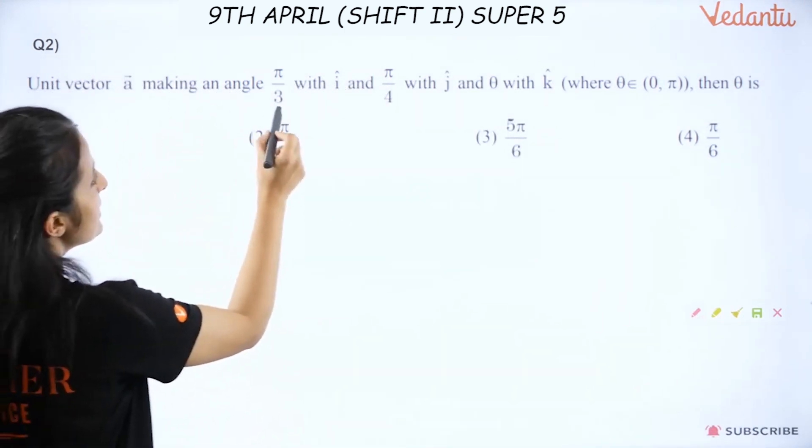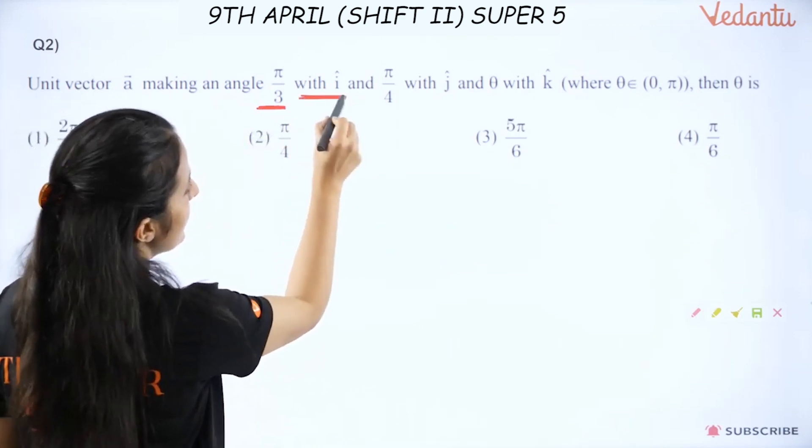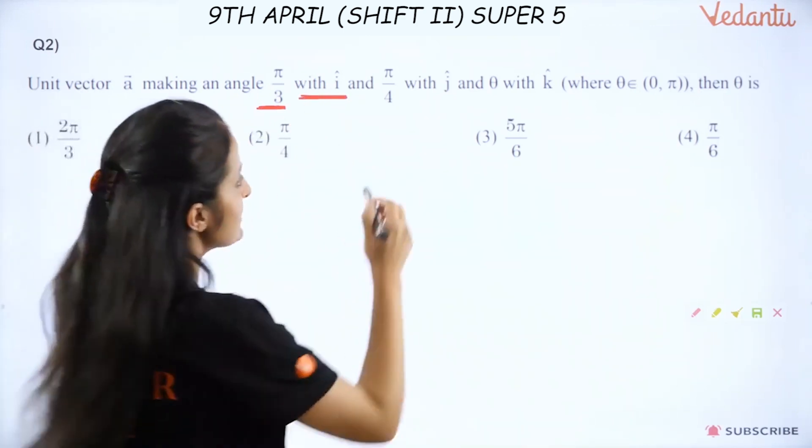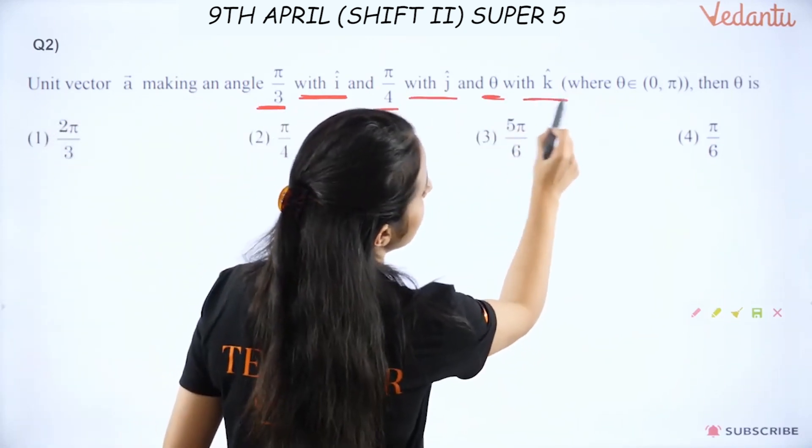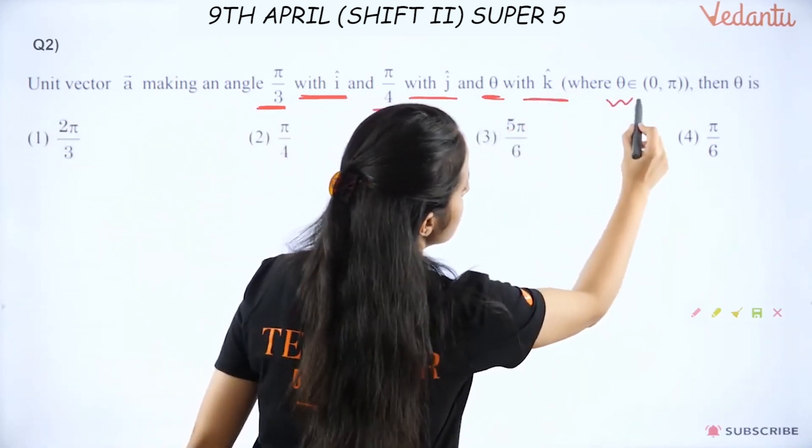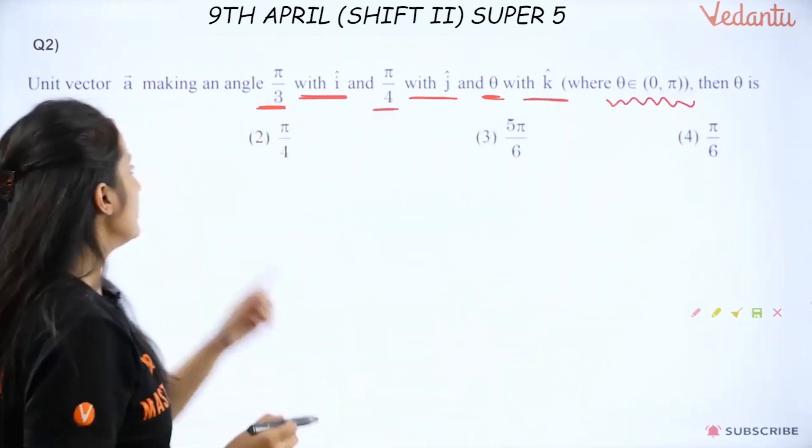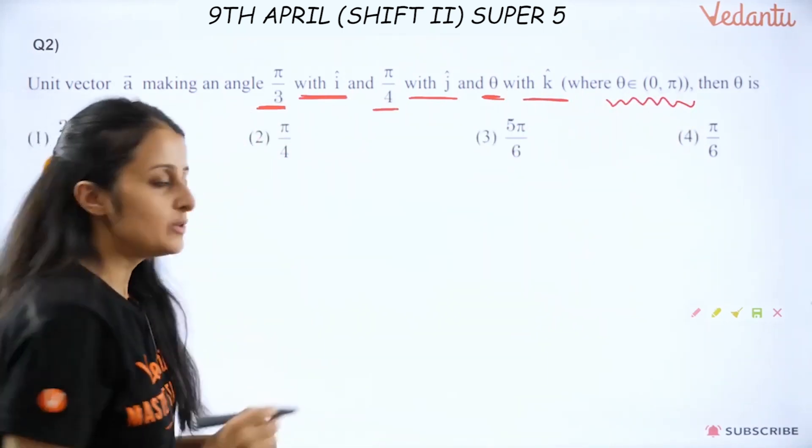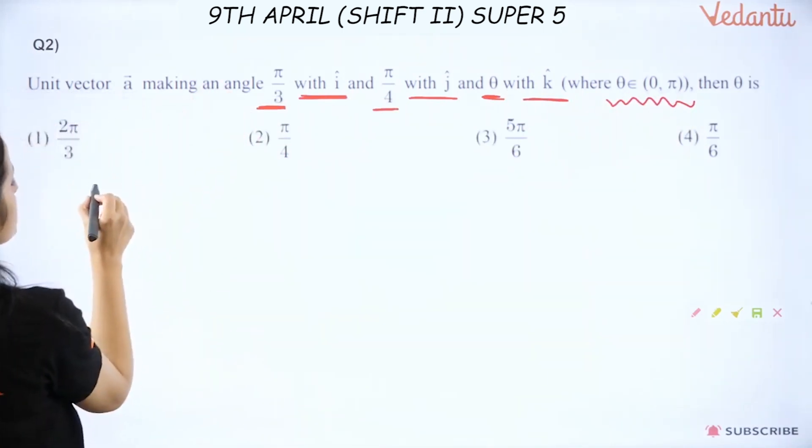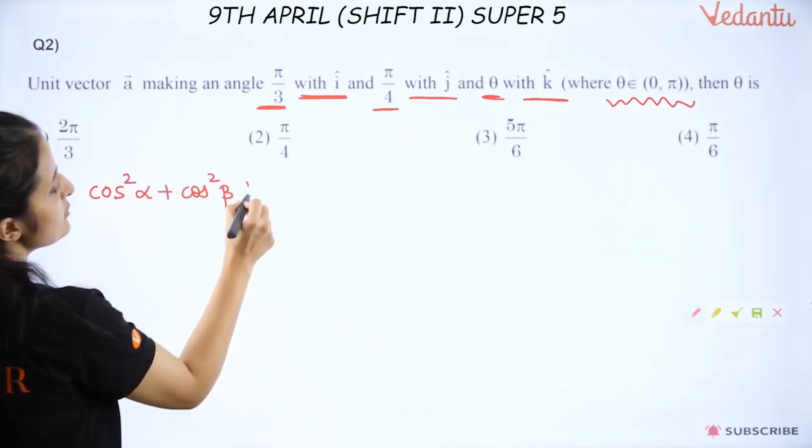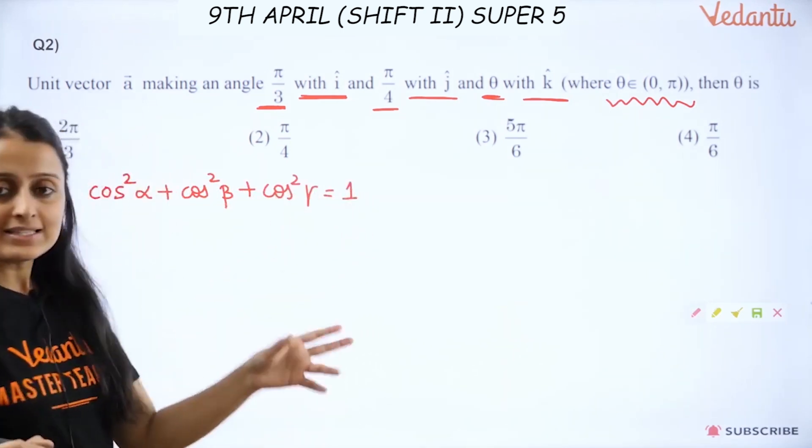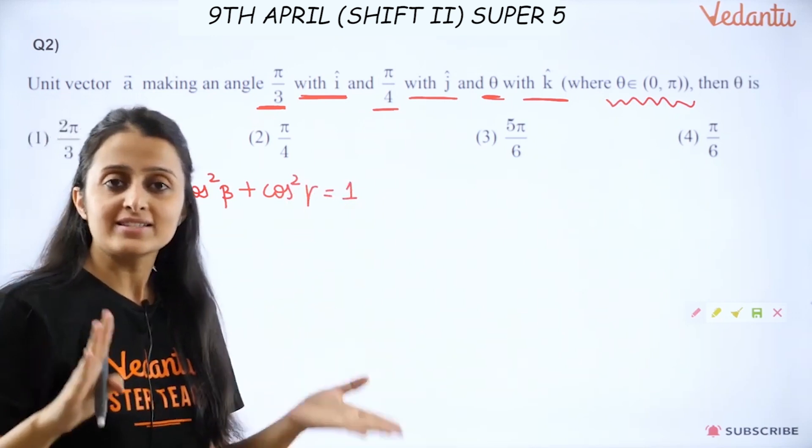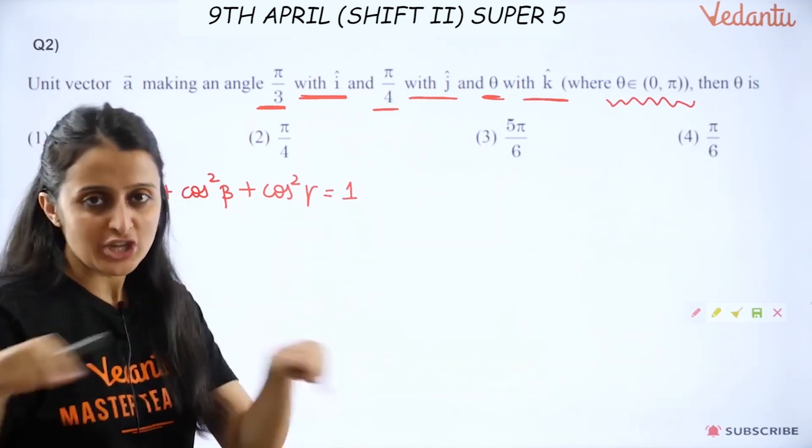This is a very easy question. If you know what direction cosines are. So if unit vector a makes an angle of π/3 with i cap, meaning with the x axis, π/4 with the j cap, meaning with y axis, and theta with the k cap. You just need to carefully note what the interval is. Then what is theta equal to?